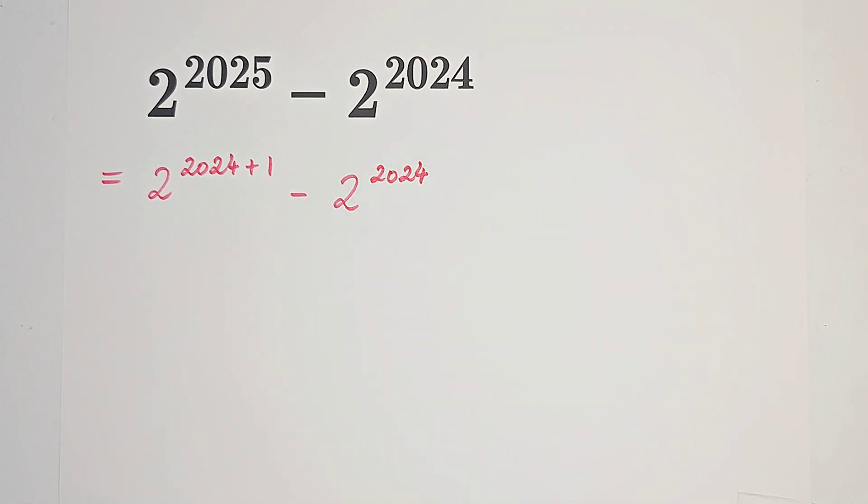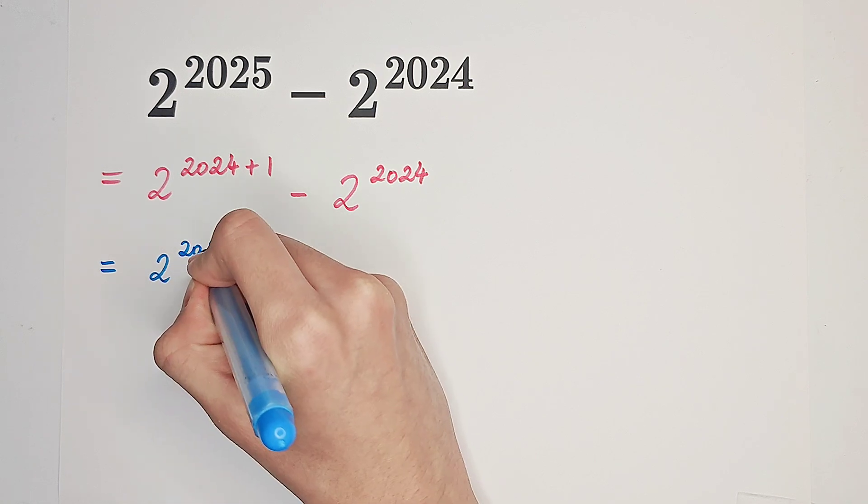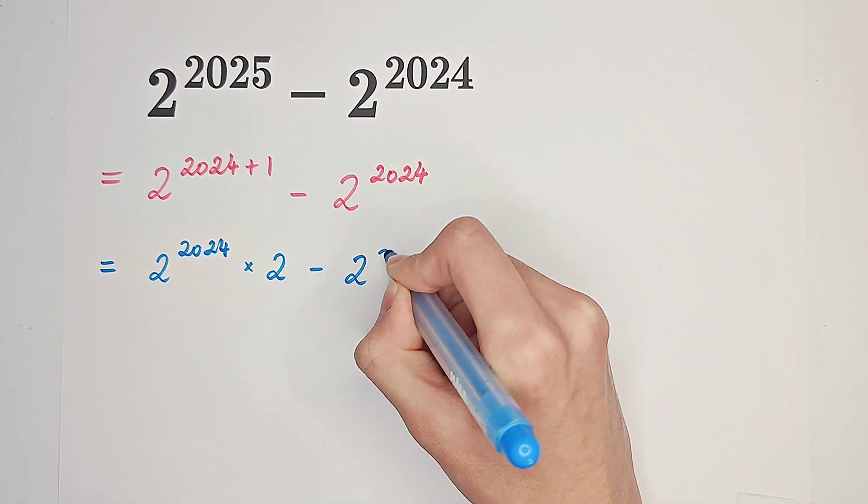So, yes. This one is 2 to the power of 2024 times 2 minus 2 to the power of 2024.